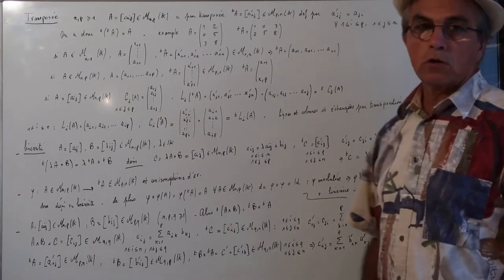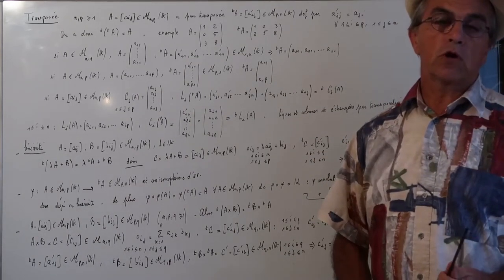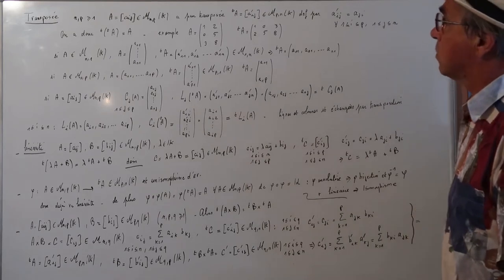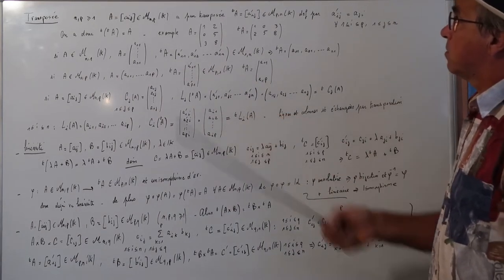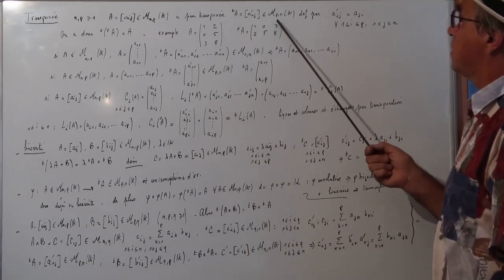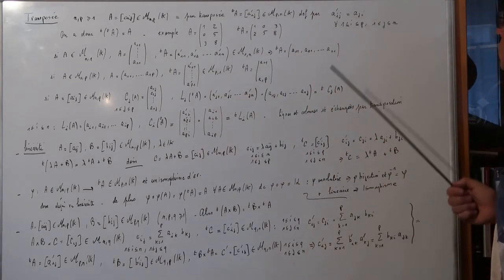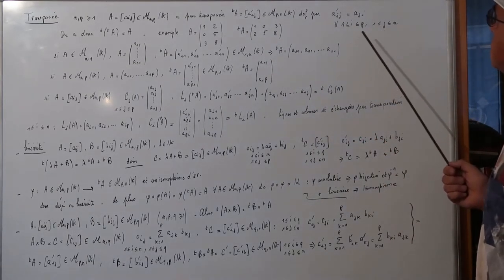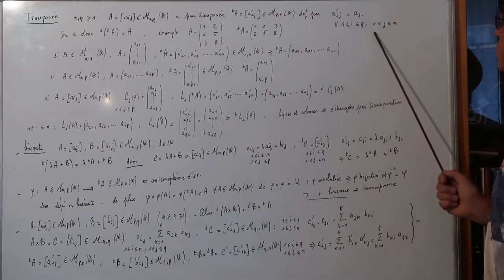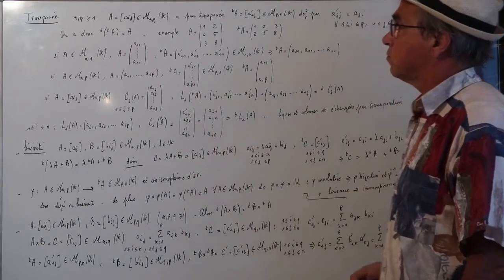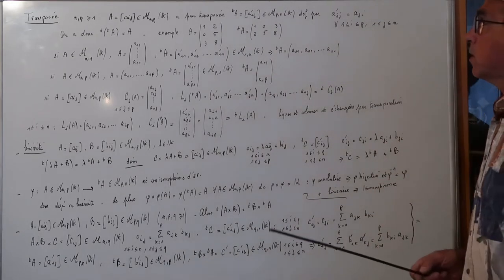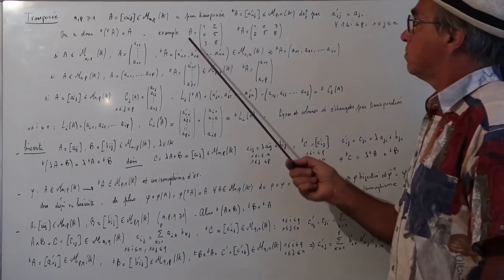Pour la transposition, K est un corps commutatif de caractéristique différente de deux. N, P, Q sont des entiers supérieurs ou égaux à 1. On prend une matrice A appartenant à M_{NP}(K). Sa transposée est la matrice TA appartenant à M_{PN}(K), définie par (TA)_{IJ} = A_{JI}, avec I entre 1 et P et J entre 1 et N. La transposée de la transposée de A est égale à A.